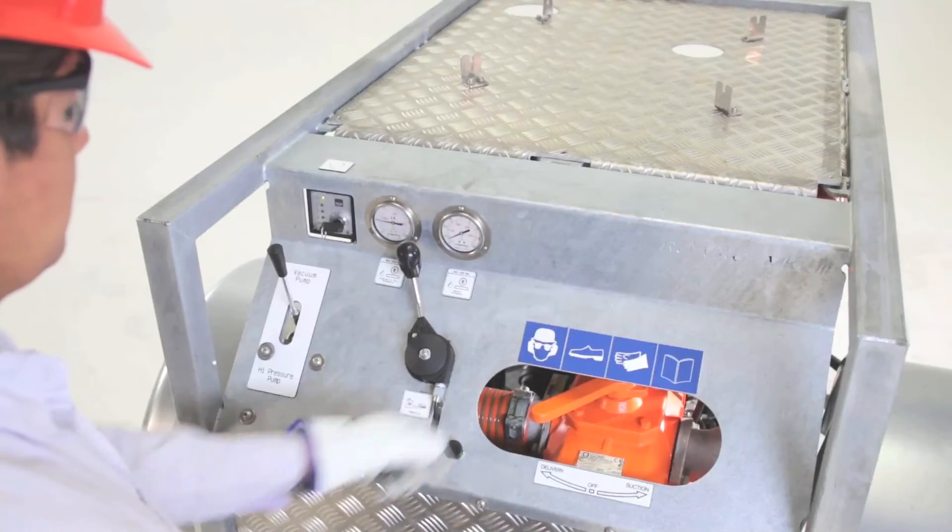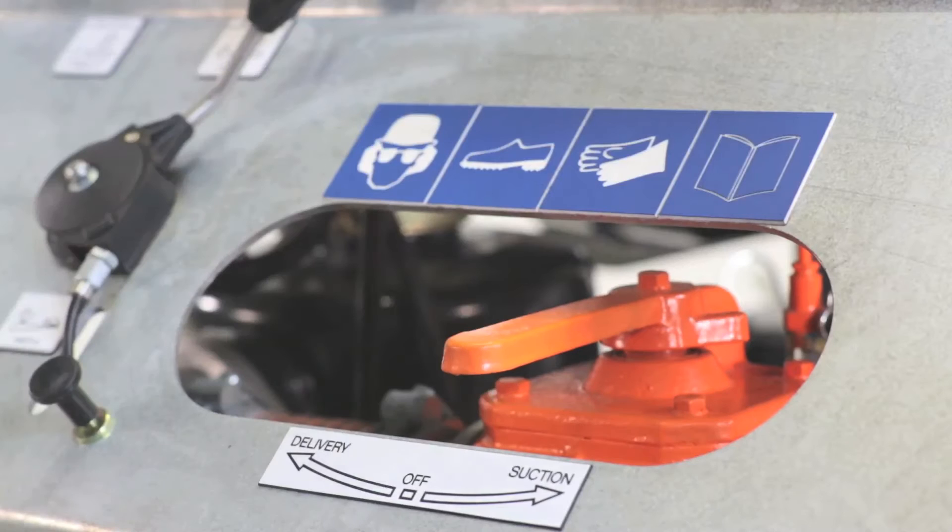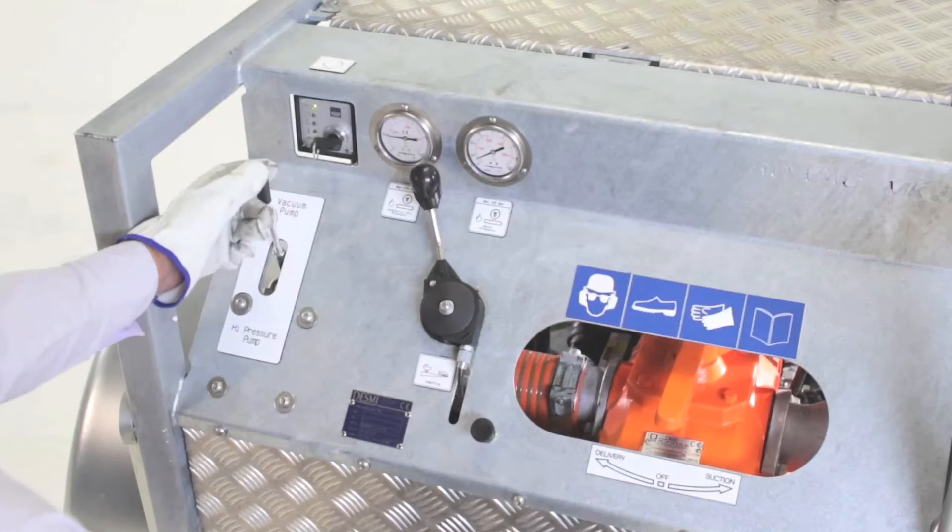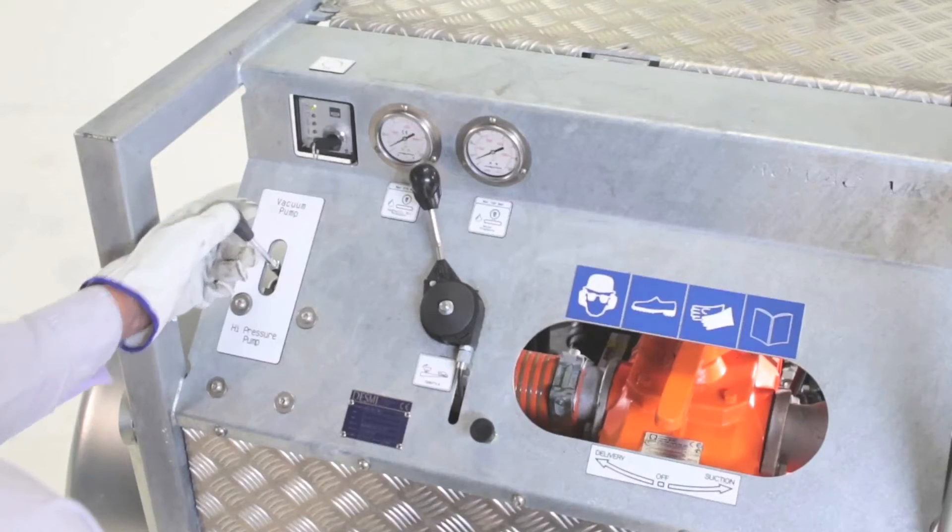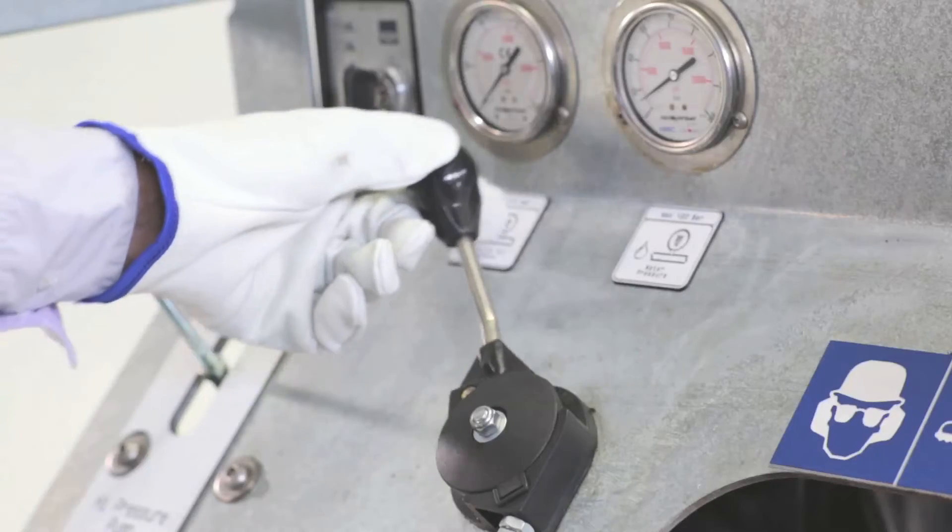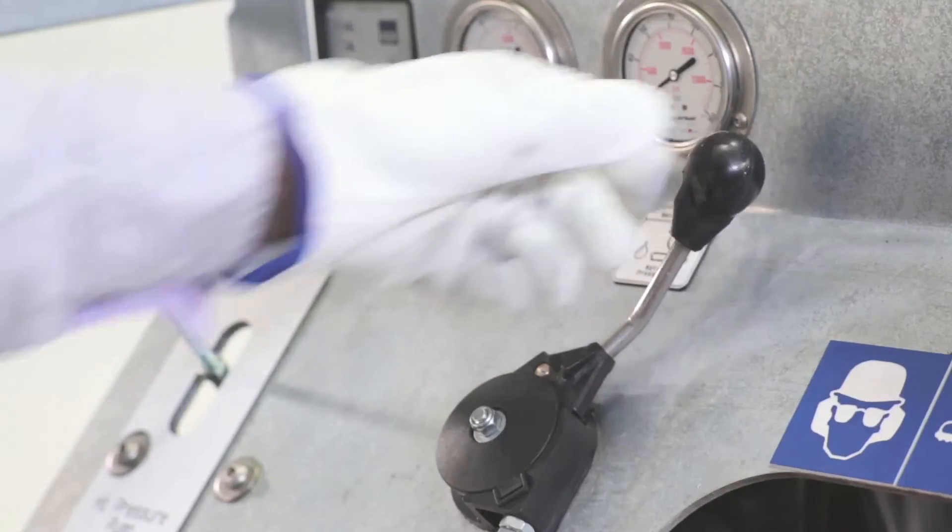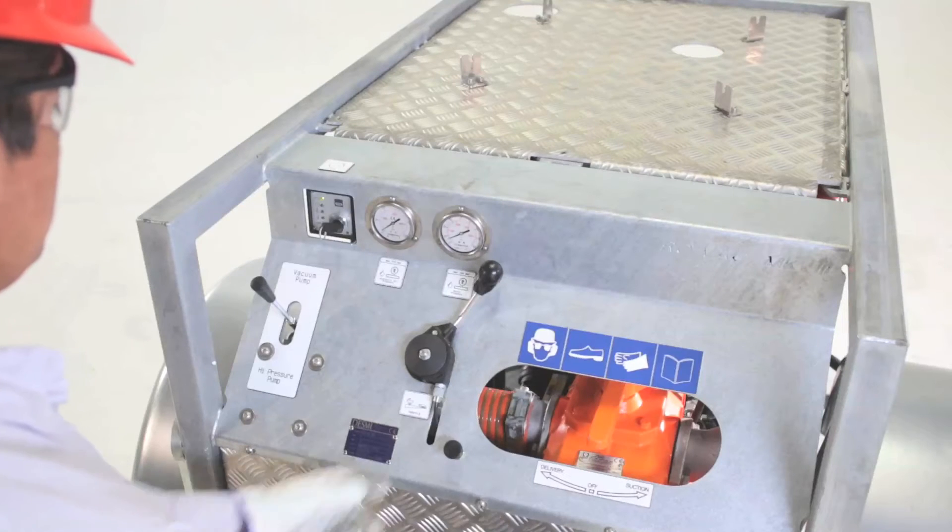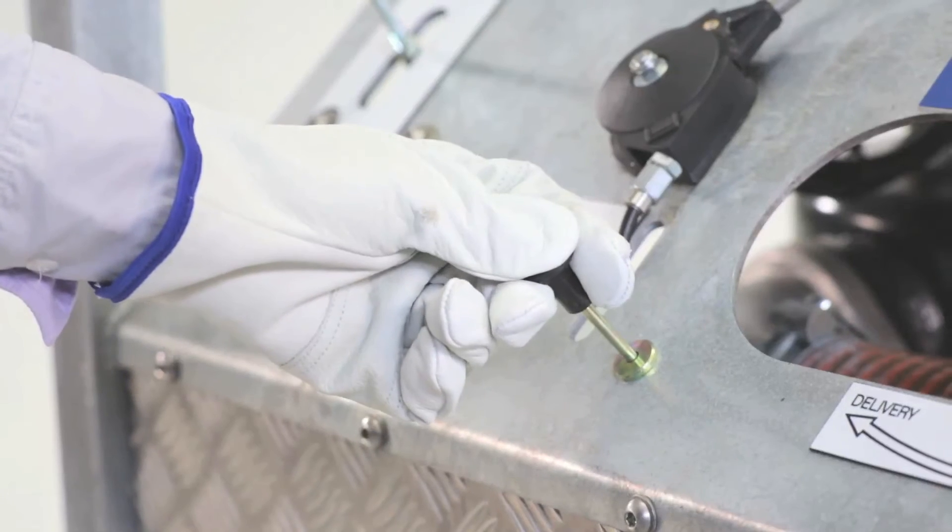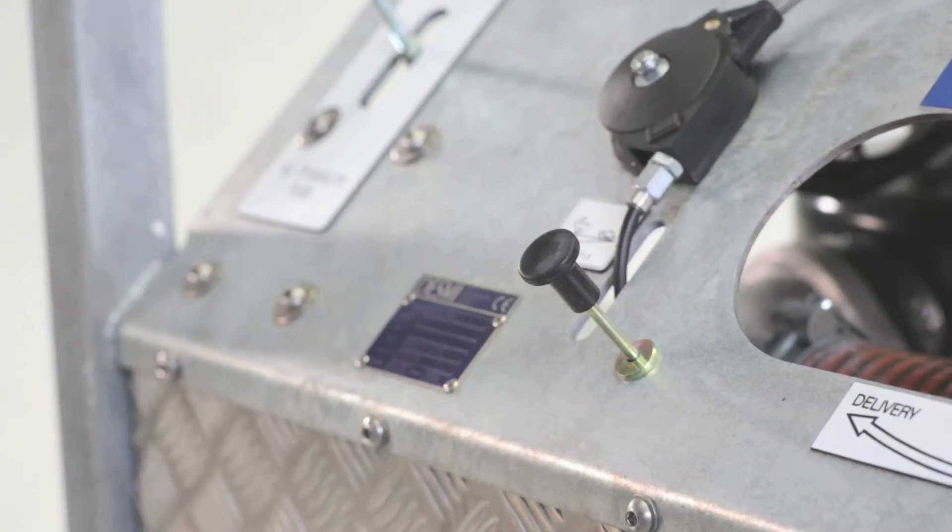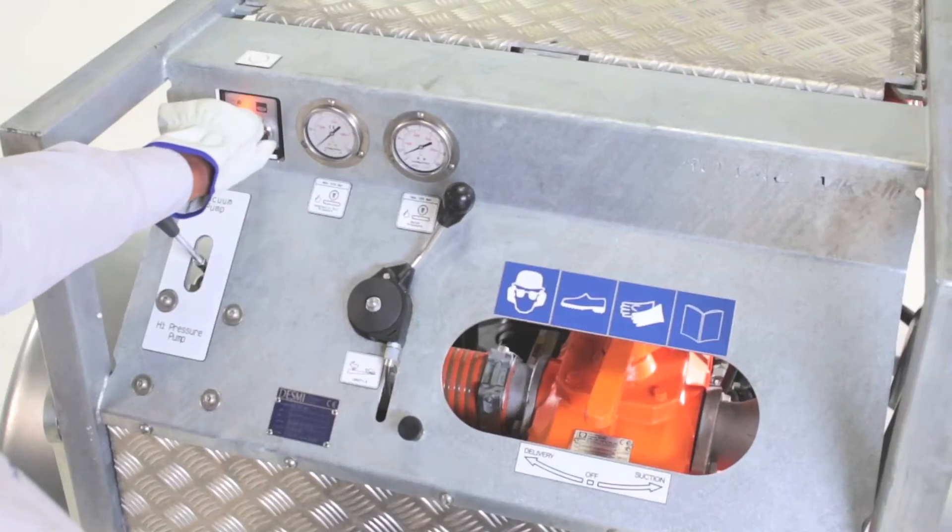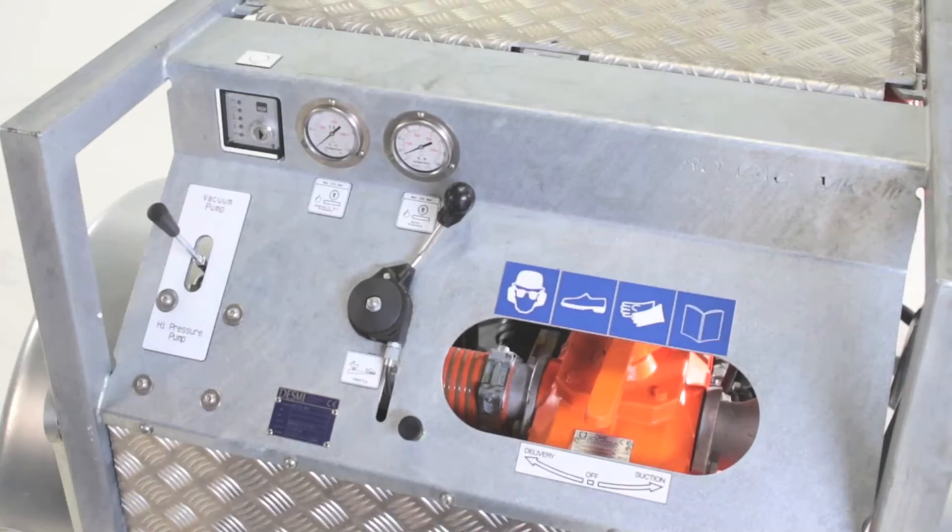Check that the hydraulic control lever and the vacuum control lever are in the neutral and off position. Progressively reduce engine speed to the idle position. Prior to shutting down the engine, allow it to run at low speed to cool down. Pull on the stop knob until the engine stops completely. Turn the ignition key to the off position and remove the key.